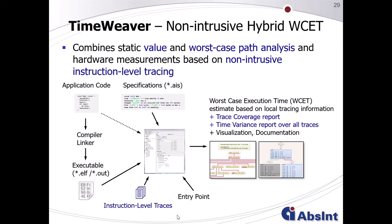The user can produce several trace files and provide them all as input to Timeweaver. The output is also similar to AIT but extended: we compute the worst-case execution time estimate based on local tracing information, and it is extended by providing an overview of trace coverage. Since we know the entire call and control flow graph and what has been executed over all traces, we can map executed instructions to what can theoretically be executed in the task, providing a trace coverage report with indications on how to improve test settings.